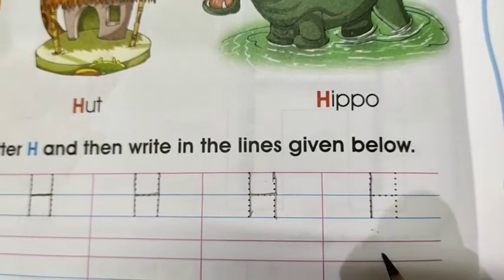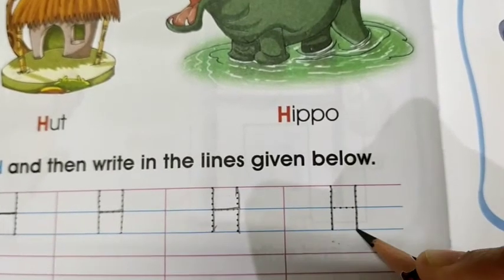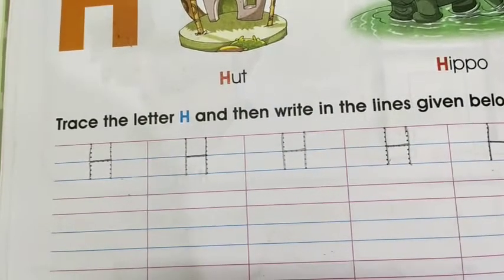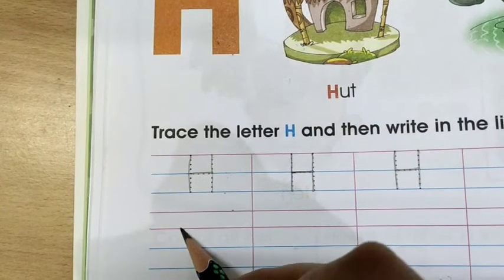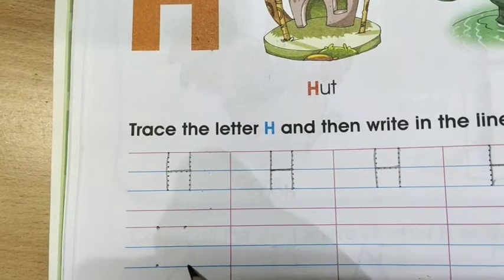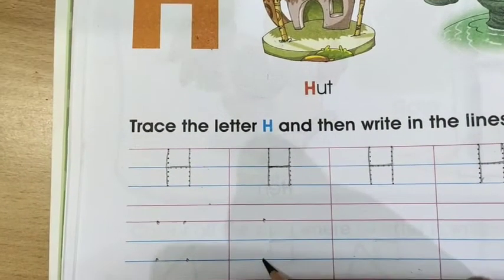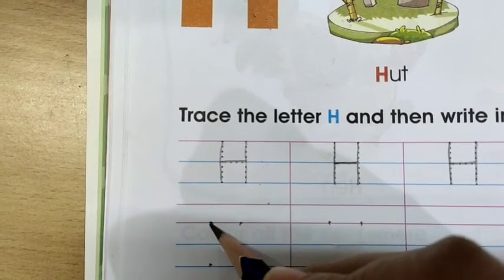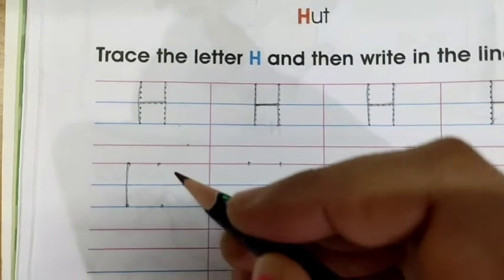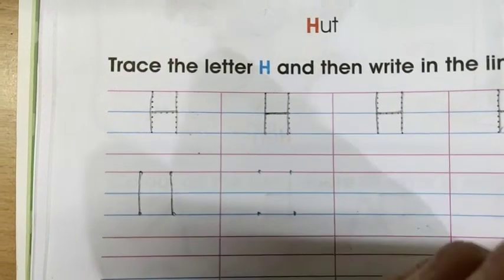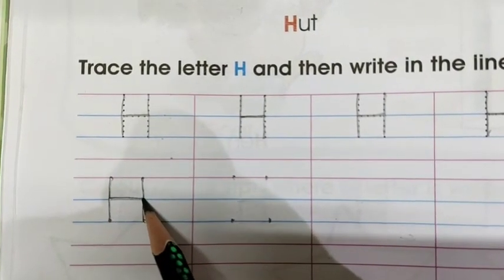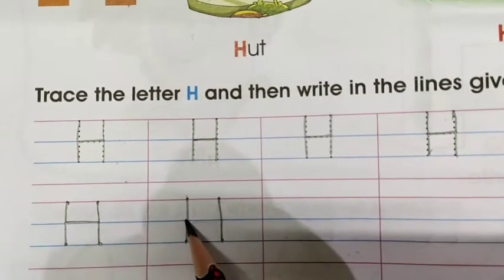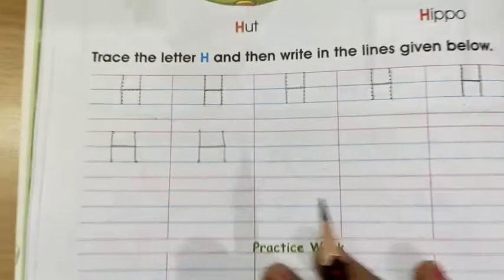Don't go beyond the blue line. This is the sleeping line and we will make it like this. I will tell you how to write it. First we will make a standing line, join the dots like this, another standing line, and make a sleeping line in the middle. One more time: standing line, another standing line, make a sleeping line in the middle. This way you will work this full page.